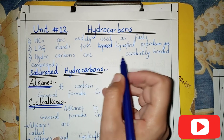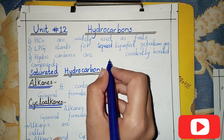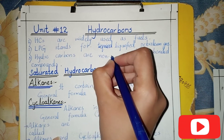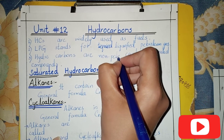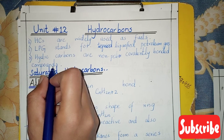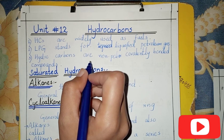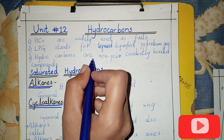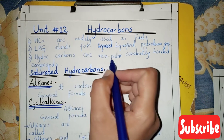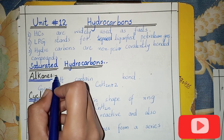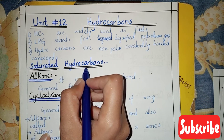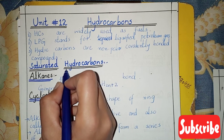Are hydrocarbons polar or non-polar? Hydrocarbons are non-polar — non-polar covalently bonded compounds. Why are they non-polar? Because they contain carbon and hydrogen atoms. That is why hydrocarbons are non-polar compounds.